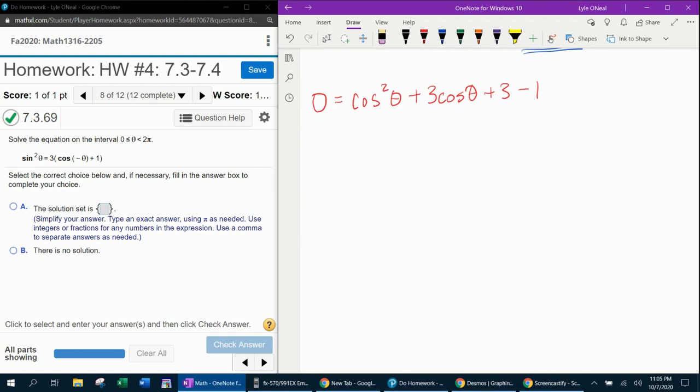And then I need to combine like terms. So we're going to have zero equals cosine squared theta plus three cosine theta, and three minus one is two.